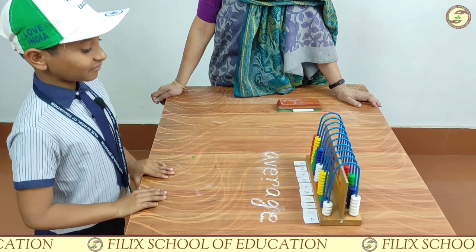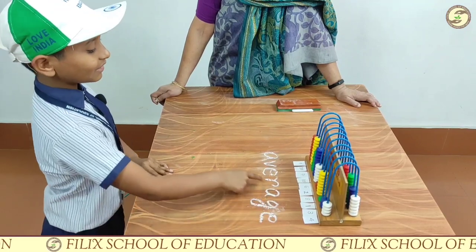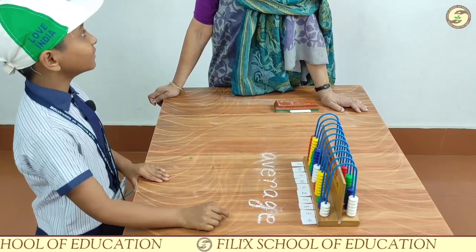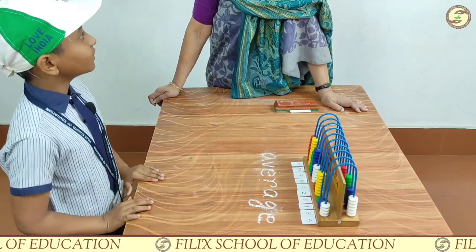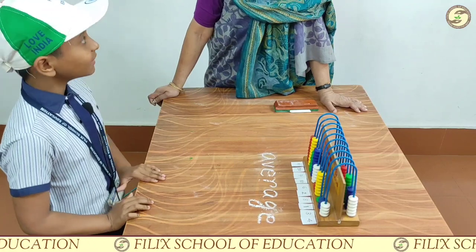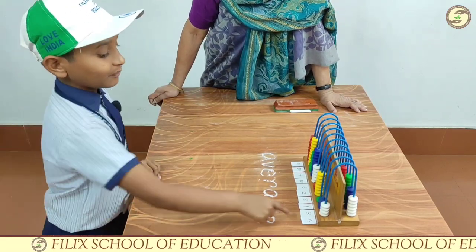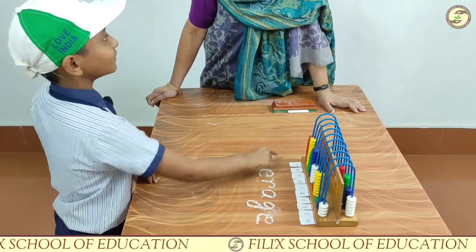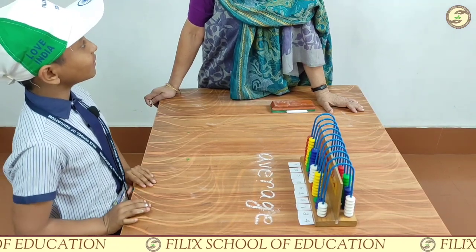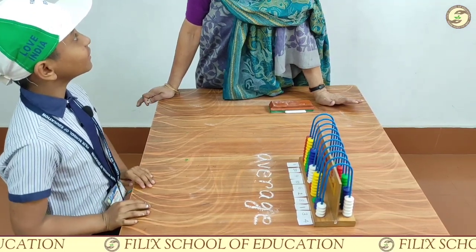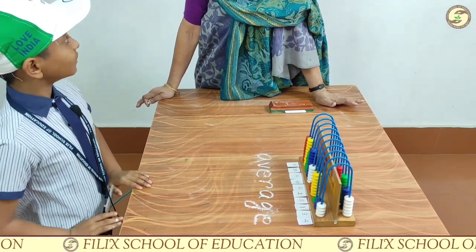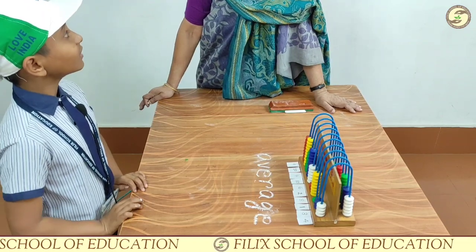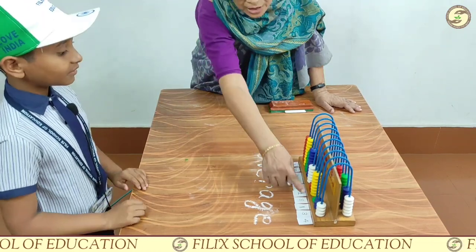First, I have to count all this. Count means? Add. Add all this. Add all this — which ones? These numbers. You are adding all this. We got — you are correct. After adding, we got 60. There are 60 beads in total.